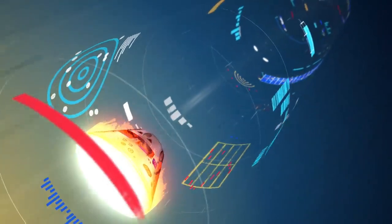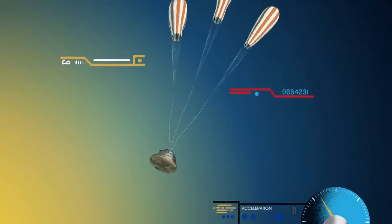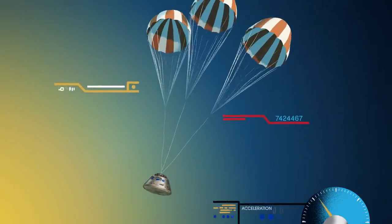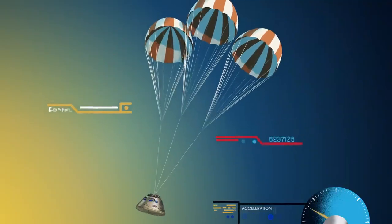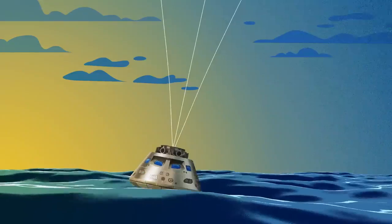With the Orion now at just 300 miles per hour, a series of parachutes uniquely tested and produced for this moment deploy, decelerating the craft to just 20 miles per hour for splashdown.